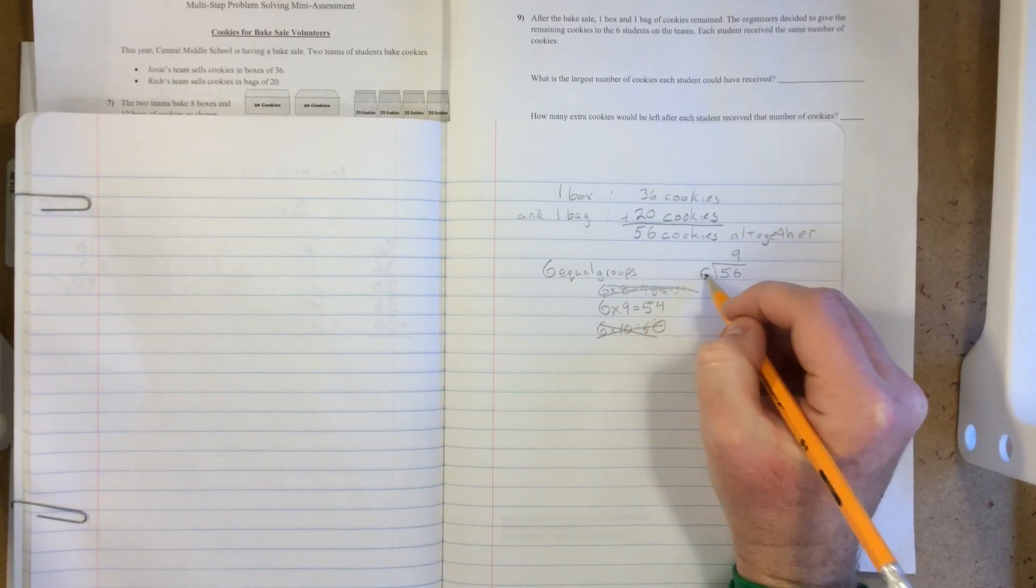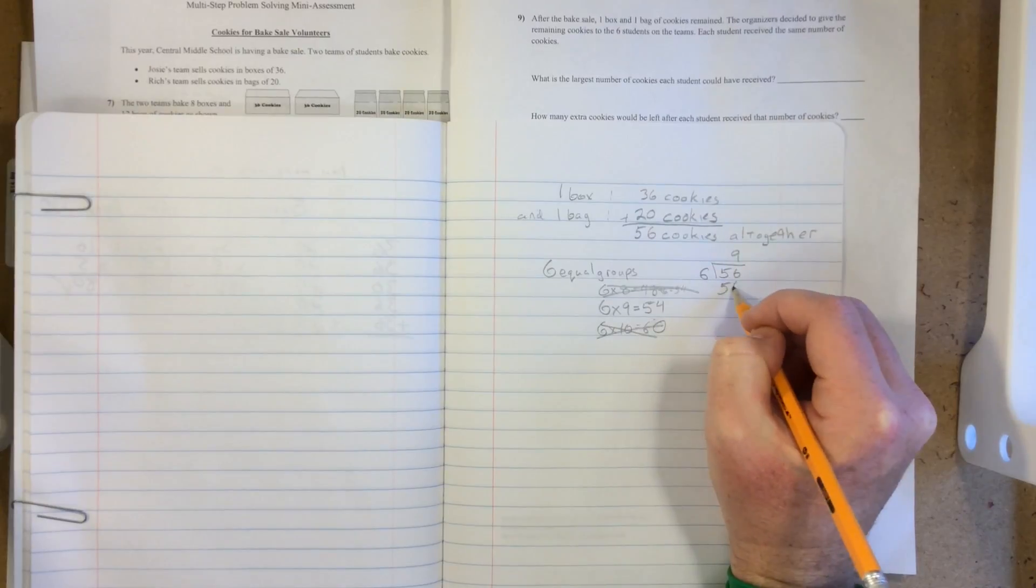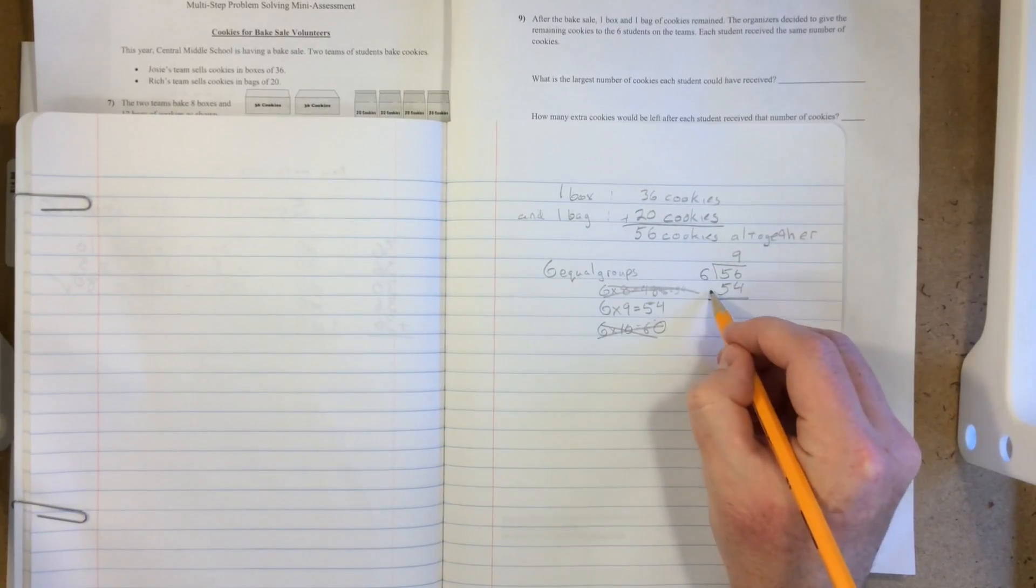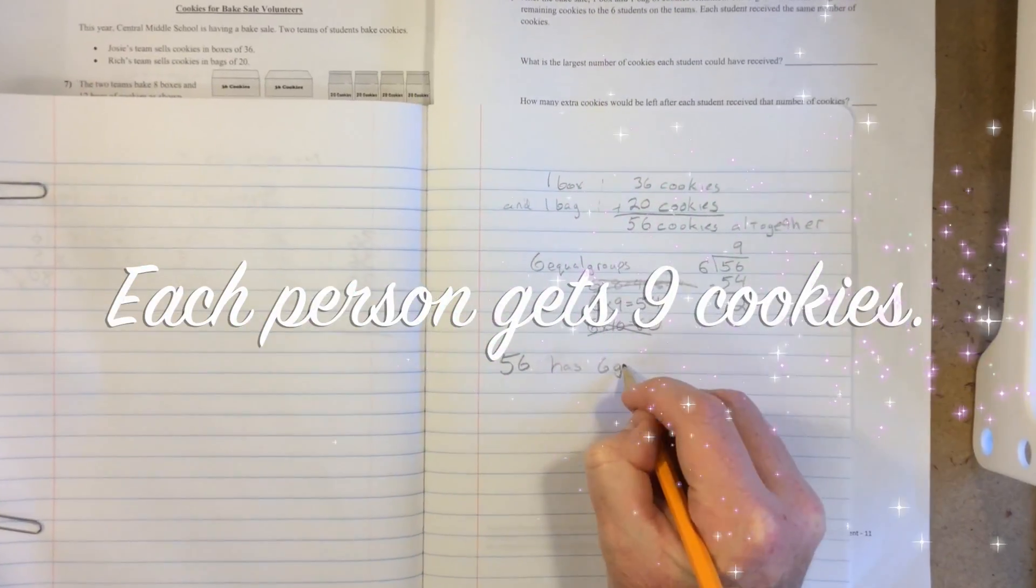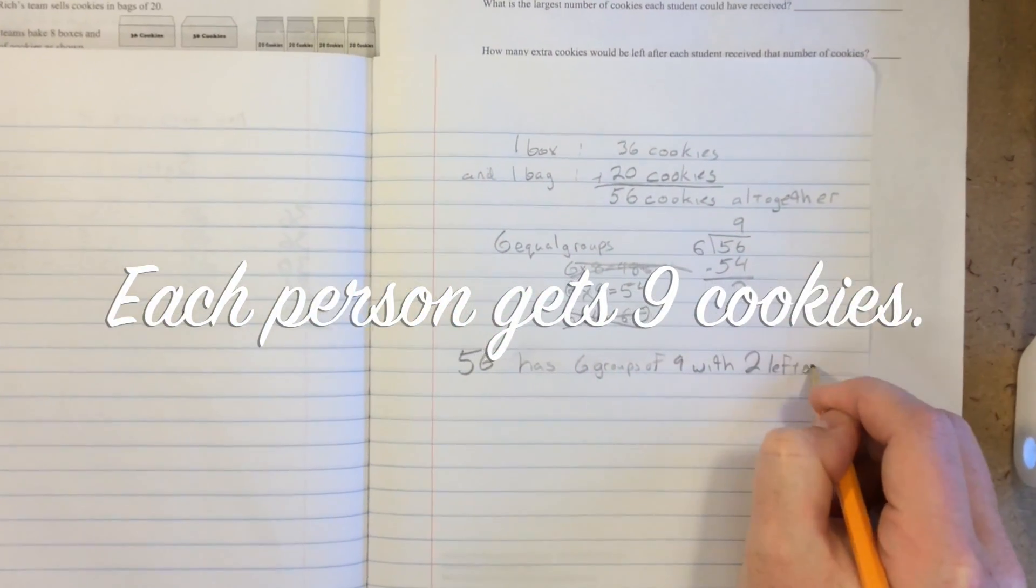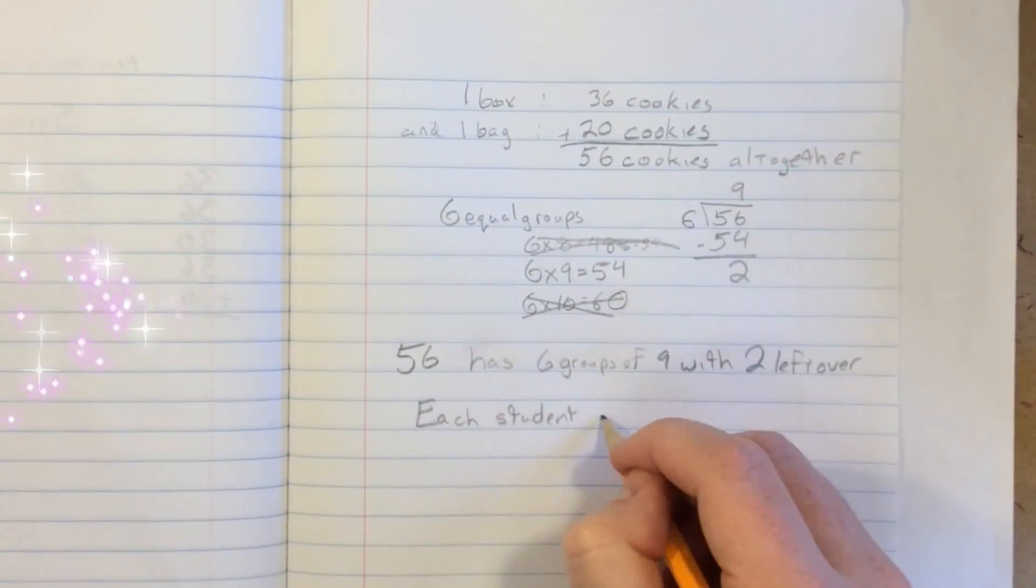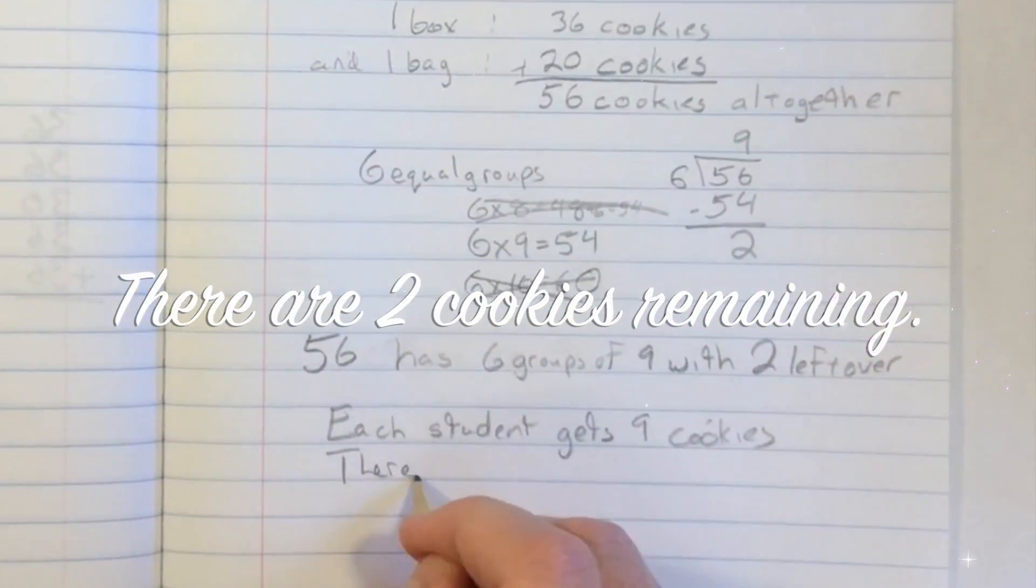9 times 6 is 54, so 56 minus 54 is 2 left over. There are 6 groups of 9 in 56 with 2 more, so each student gets 9 cookies and there will be 2 remaining.